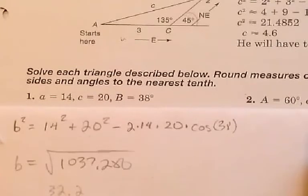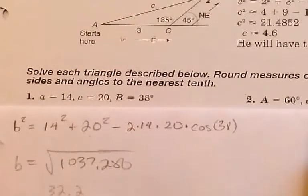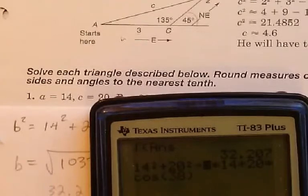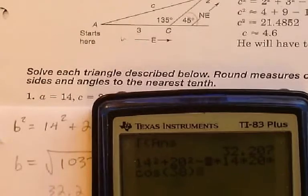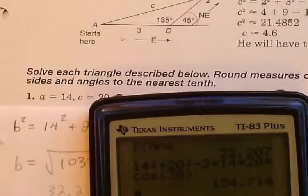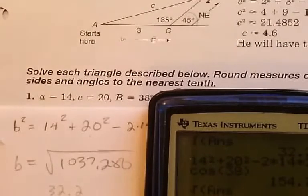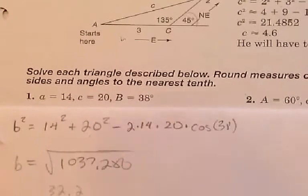Wait — is that right? Could that possibly be right? Let's see — I did not subtract; I added right there. This is supposed to be subtraction. I knew I did something wrong whenever I got such a big number. So it's 154. Square root of 154 — that's the right answer. 12.43 — so B equals 12.4.